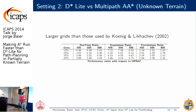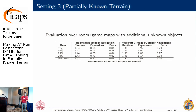For larger grids, we ran the same kind of experiments and got even better speedups — comparing D* Lite against multipath adaptive A* on larger grids shows the speedup we achieve. We also evaluated in more realistic environments: room maps where the algorithm knows the room layout initially but not where additional obstacles will appear. Using room maps and Warcraft maps from Nathan's pathfinding benchmark repository, we still get clear benefits.